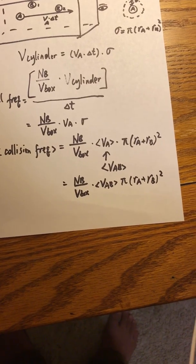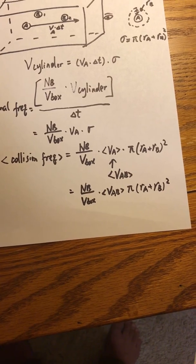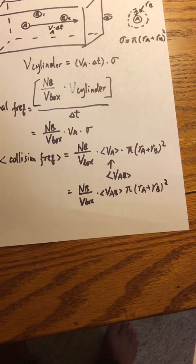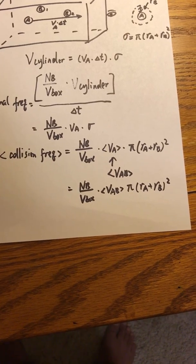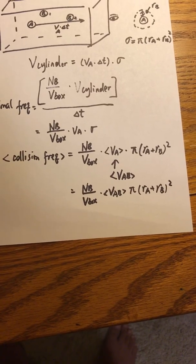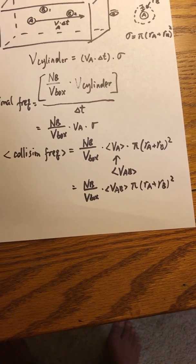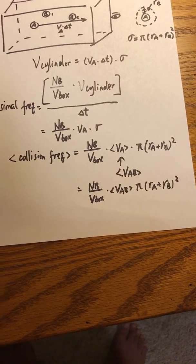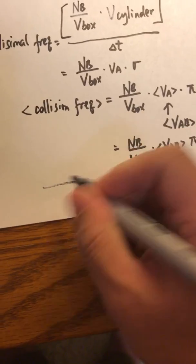Now we calculate the mean free path for A. The mean free path is defined as the distance traveled by A between successive collisions — so A collides with a B molecule, then maybe collides with another B, and the distance between those two collisions is the mean free path. To get it, we take the reciprocal of the collision frequency, which gives the time period between two successive collisions.